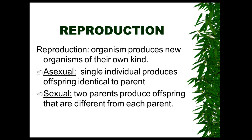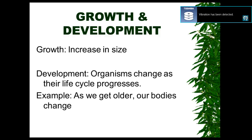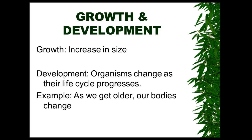Reproduction: organisms produce new organisms of their own kind. Asexual reproduction is when a single individual produces an offspring identical to the parent. Sexual reproduction involves two parents that produce offspring that share traits from each parent. Growth means to increase in size. Development means organisms change as their life cycle progresses — for example, as we get older, our bodies change.